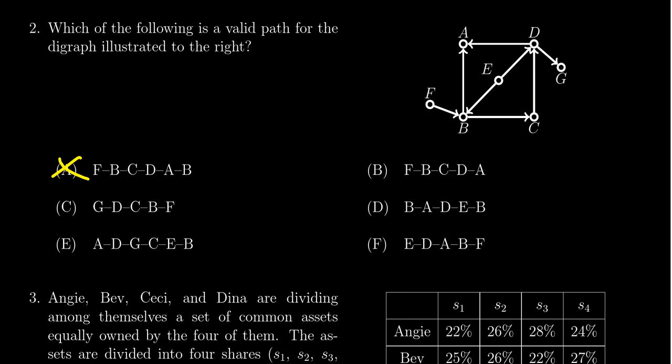You look at the next one, choice B. So you go from F to B to C to D to A. All right, that one sounds good. That totally seems good there. So it looks like the choice is going to be B.